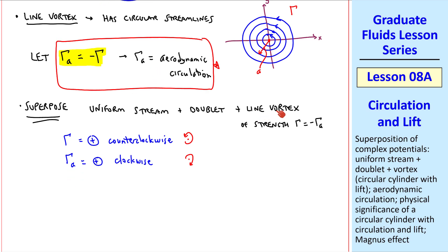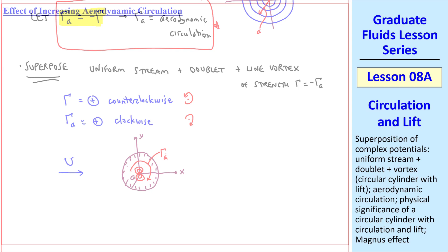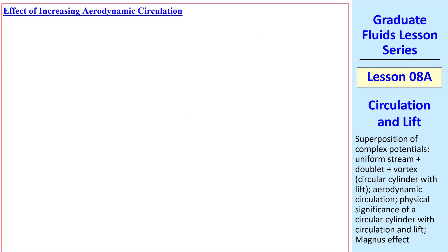When we add the line vortex, because of this circular streamline here, it turns out that the circle that we're pretending is a solid wall is not affected. So we have our uniform stream, our doublet inside here, and now a clockwise circulation, gamma A. Let's look at the effect of increasing aerodynamic circulation, gamma A.